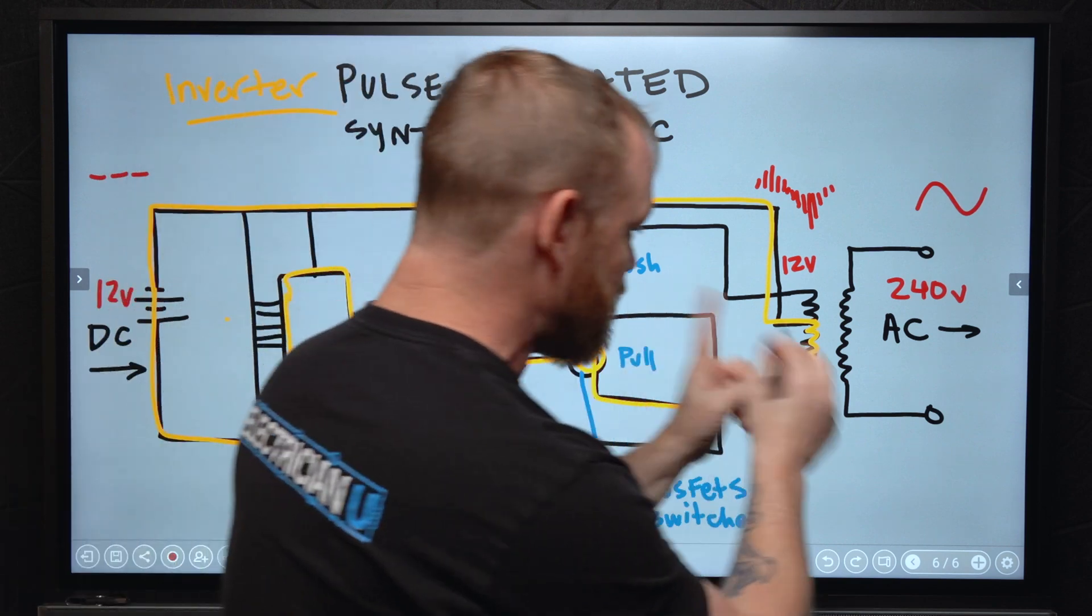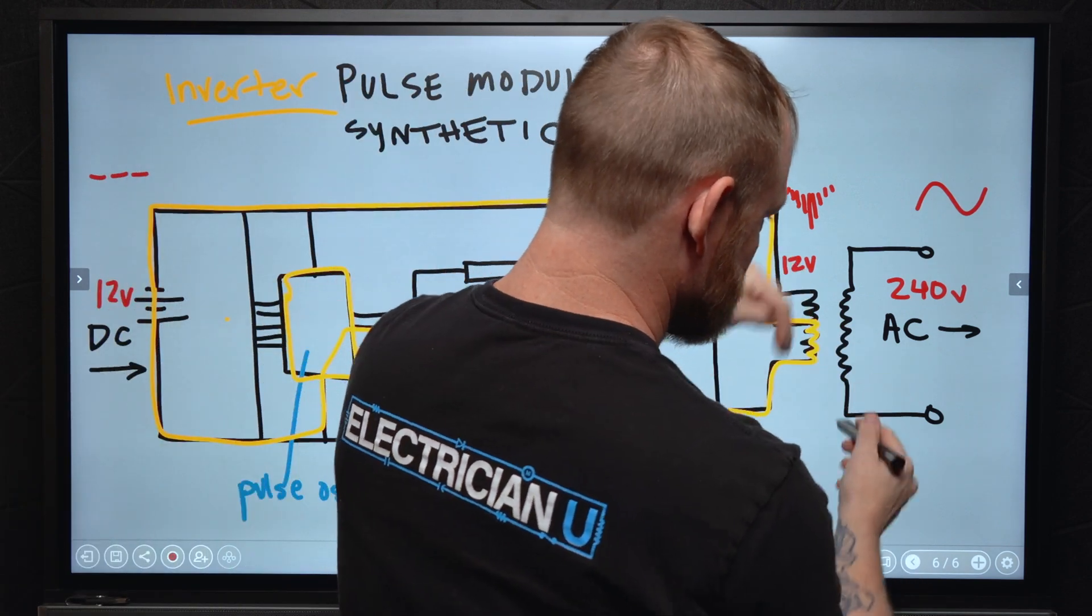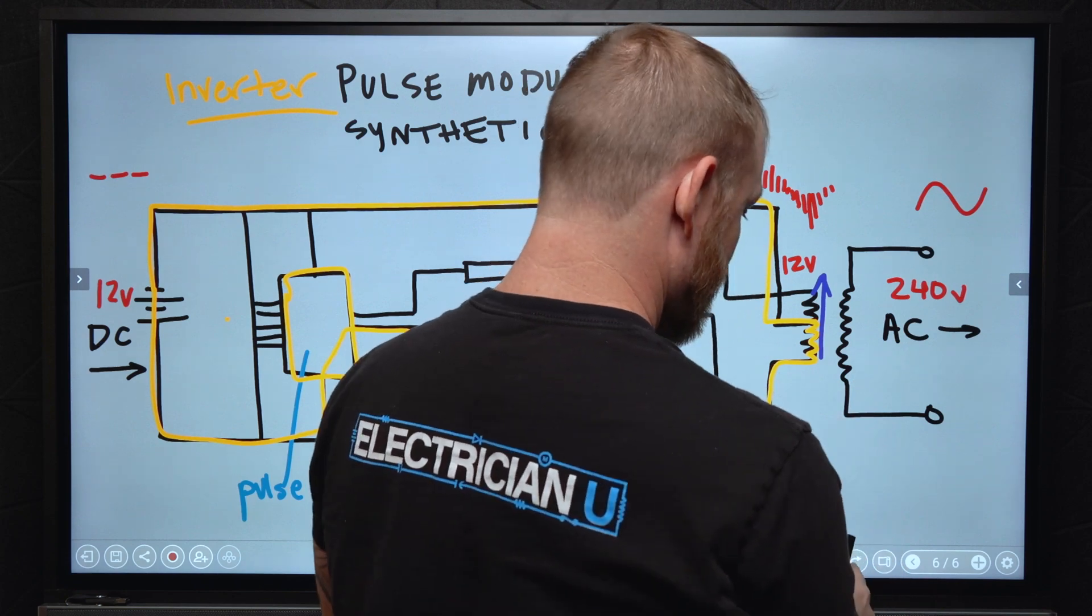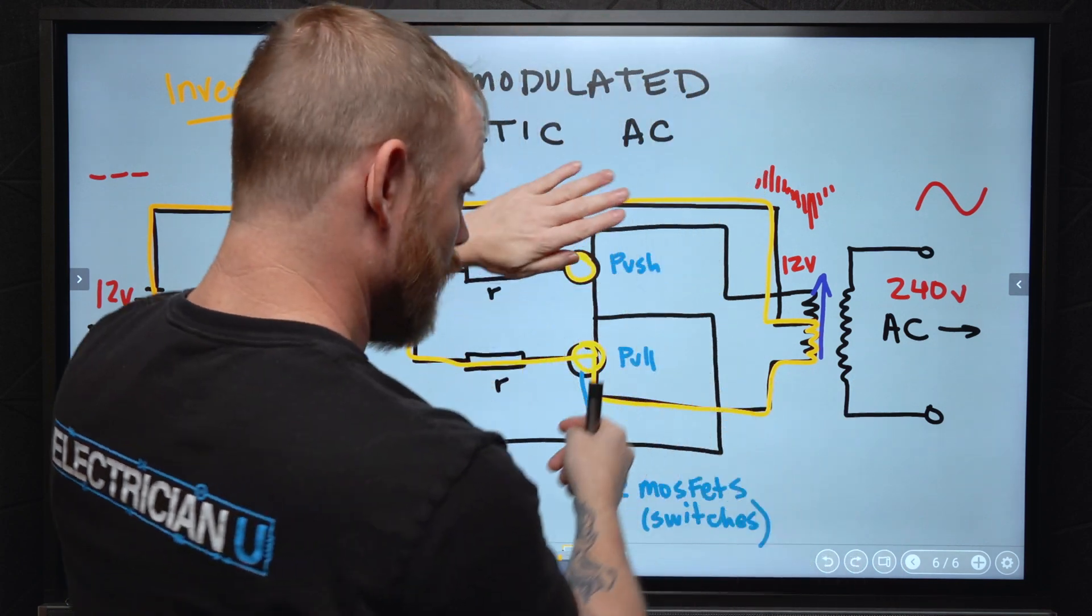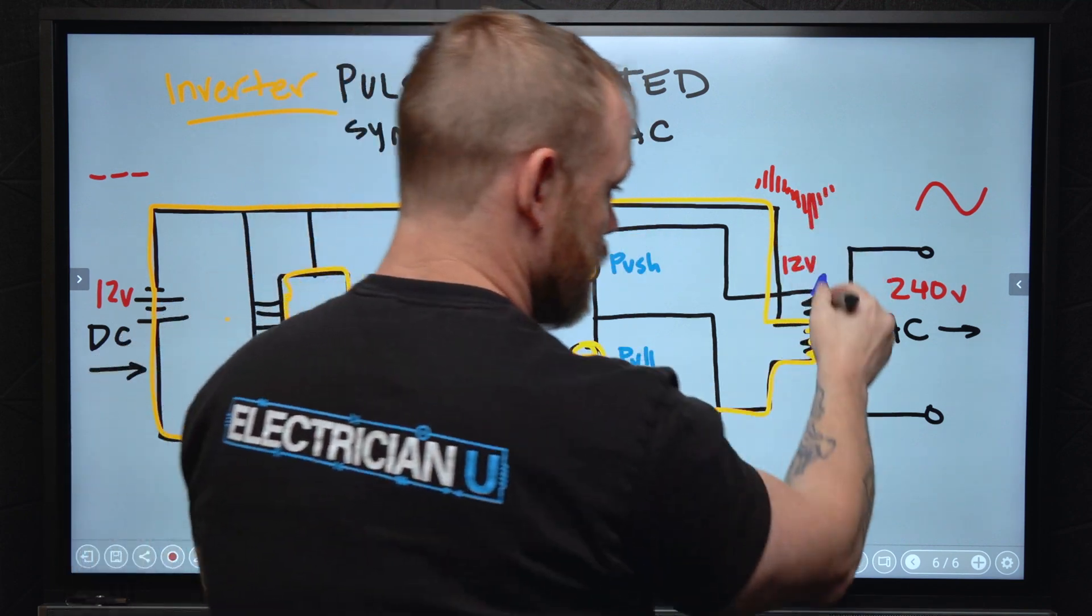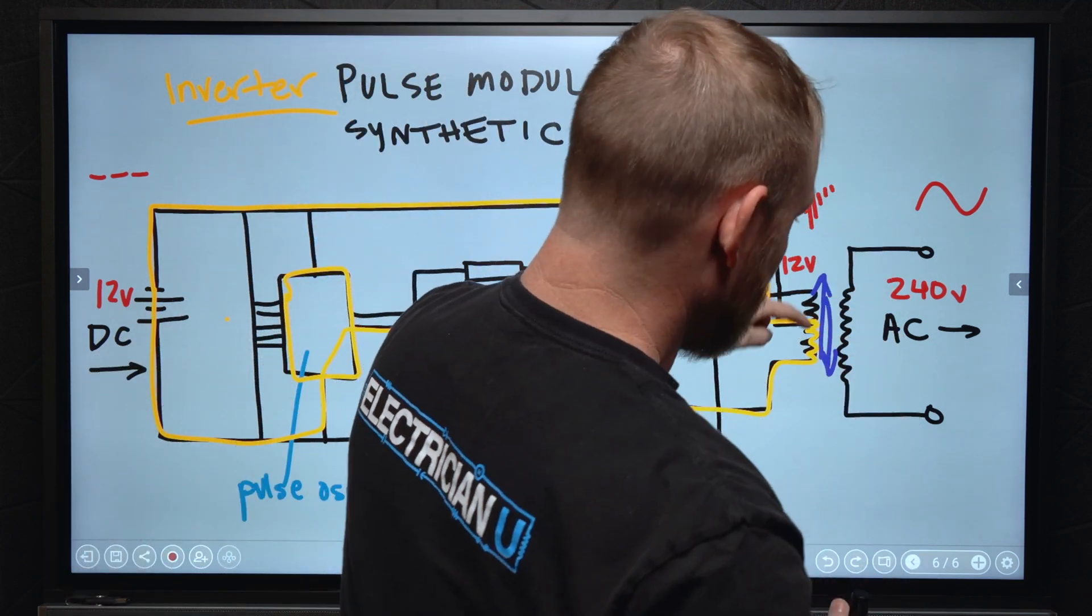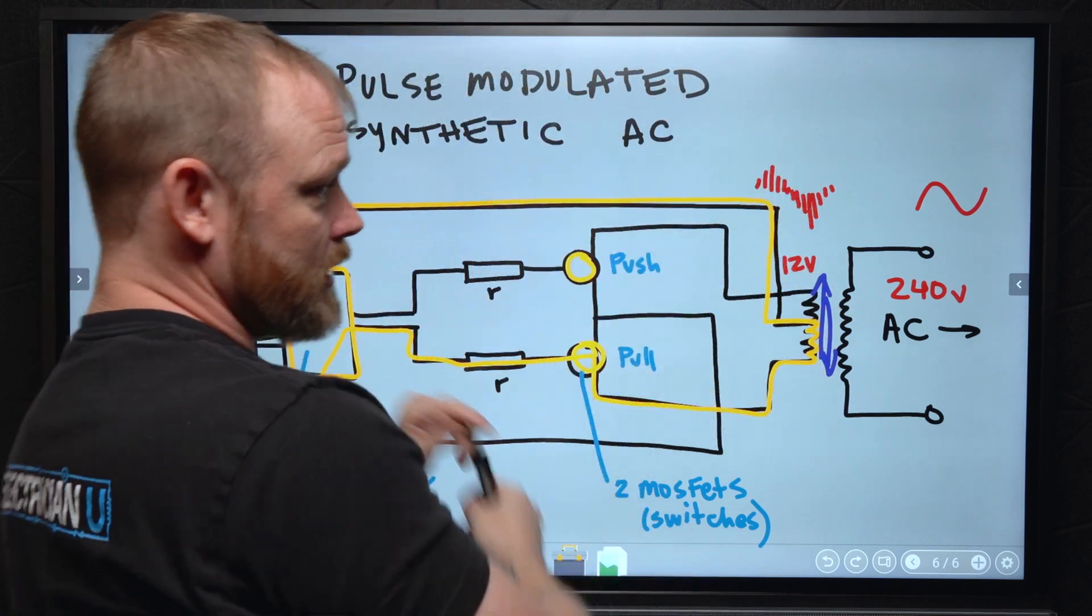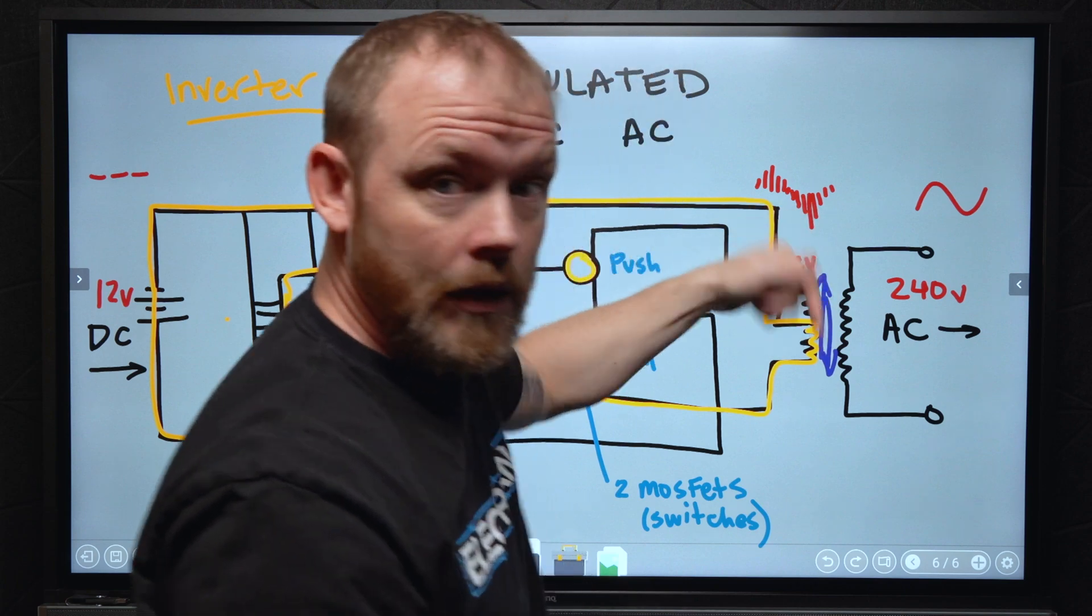But the cool result of it is, we're faking because we're allowing this transformer to have current going in one direction. And then immediately when one of these turns on, it's going in one direction. When it turns off, the other one turns on, current's going in the other direction. So it creates this oscillating of current that's being controlled electronically back and forth through that primary really, really fast.